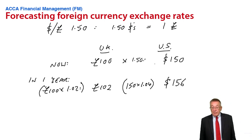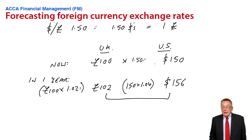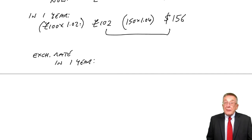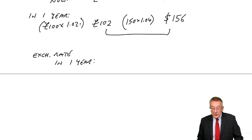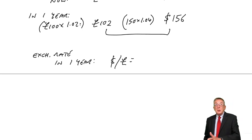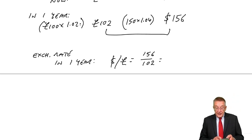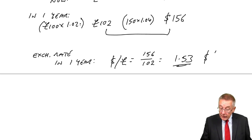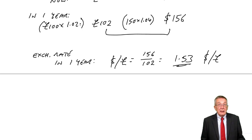What purchasing power parity says is that the exchange rate will change to keep the two prices equivalent. So what would the exchange rate have to be in a year's time? For £102 to be equivalent to $156 — remembering we're quoting how many dollars equals £1 — £1 will be 156 over 102, giving an exchange rate of $1.53 to the pound. So the pound will be buying more dollars, meaning the pound is stronger, or the dollar is weaker.